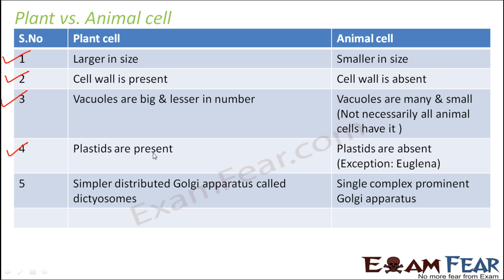Plastids are present in plant cells, and one of the prominent plastids is chloroplast, which imparts green colour to the leaves of plants and also helps in photosynthesis. In animal cells, plastids are absent. There is just one exception, and that is Euglena. Euglena is a protozoa — it is an animal but it has plastids, so it is the only exception.